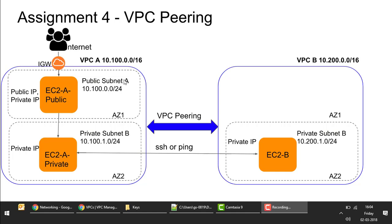The two VPCs must not have overlapping IP CIDR ranges — you cannot peer two VPCs which have similar or overlapping CIDRs. We will be creating 10.0.0.0/16 for the first VPC and 10.2.0.0/16 for the second VPC, calling them VPC A and VPC B. Always keep a network diagram handy when setting up the network, as it really helps you quickly understand what you're doing in AWS.